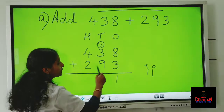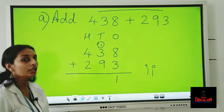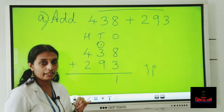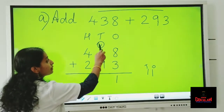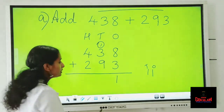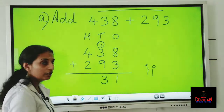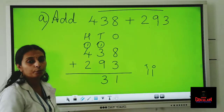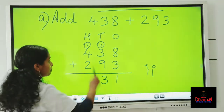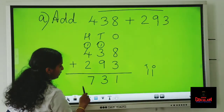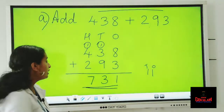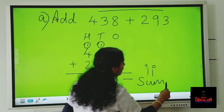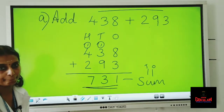And three plus nine — keep nine in the mind, three on the fingers. After nine: ten, eleven, twelve. And twelve plus one is thirteen. We write three here and one is the carryover. And four plus two — we know four plus two is six. Six plus one is seven. So the answer is seven hundred thirty-one. The answer of addition is called sum.